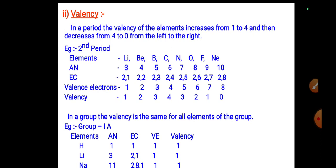Valency in a period: the valency of elements increases from 1 to 4 and then decreases from 4 to 0, going from left to right. For example, in the second period — lithium, beryllium, boron, carbon, nitrogen, oxygen, fluorine, and neon.